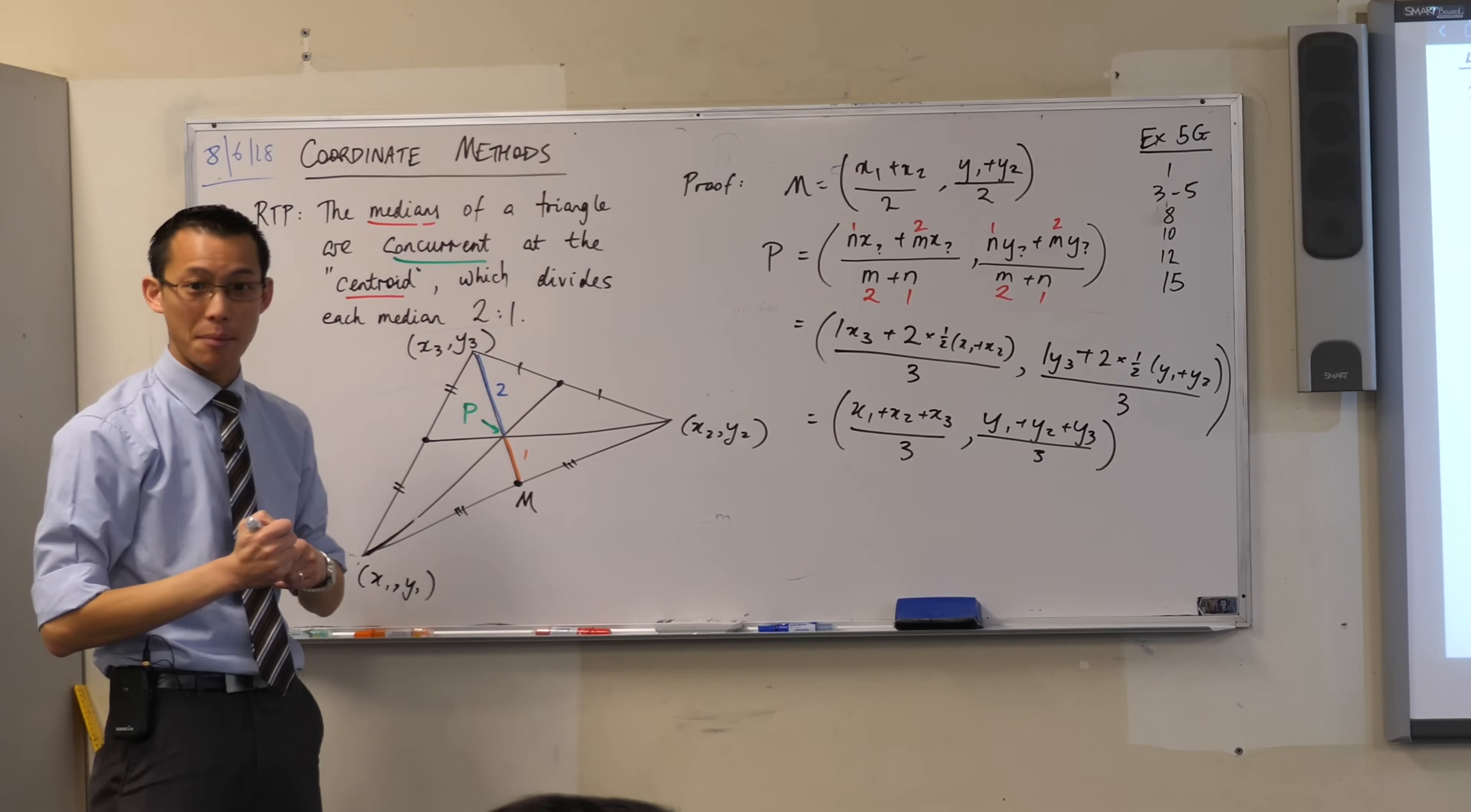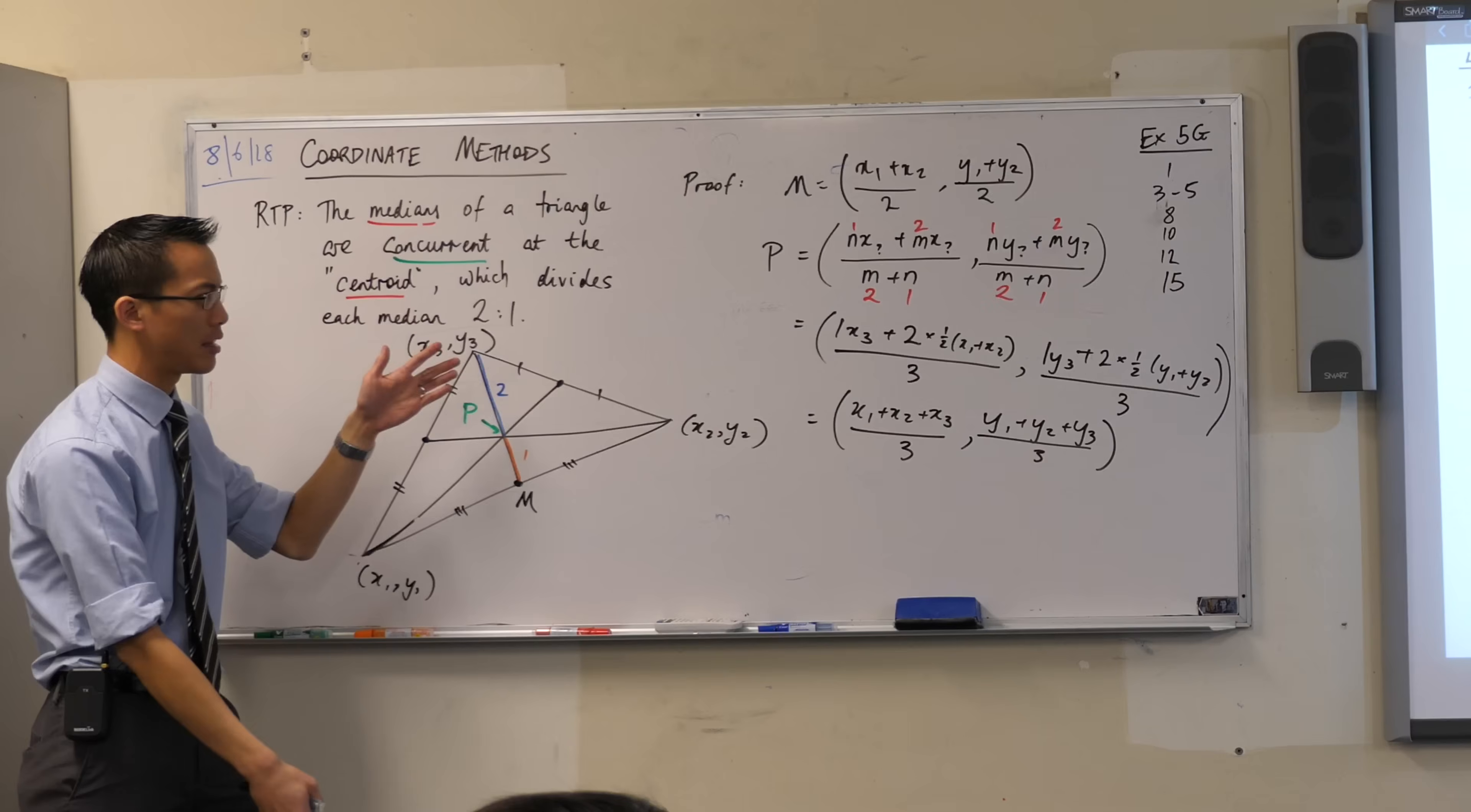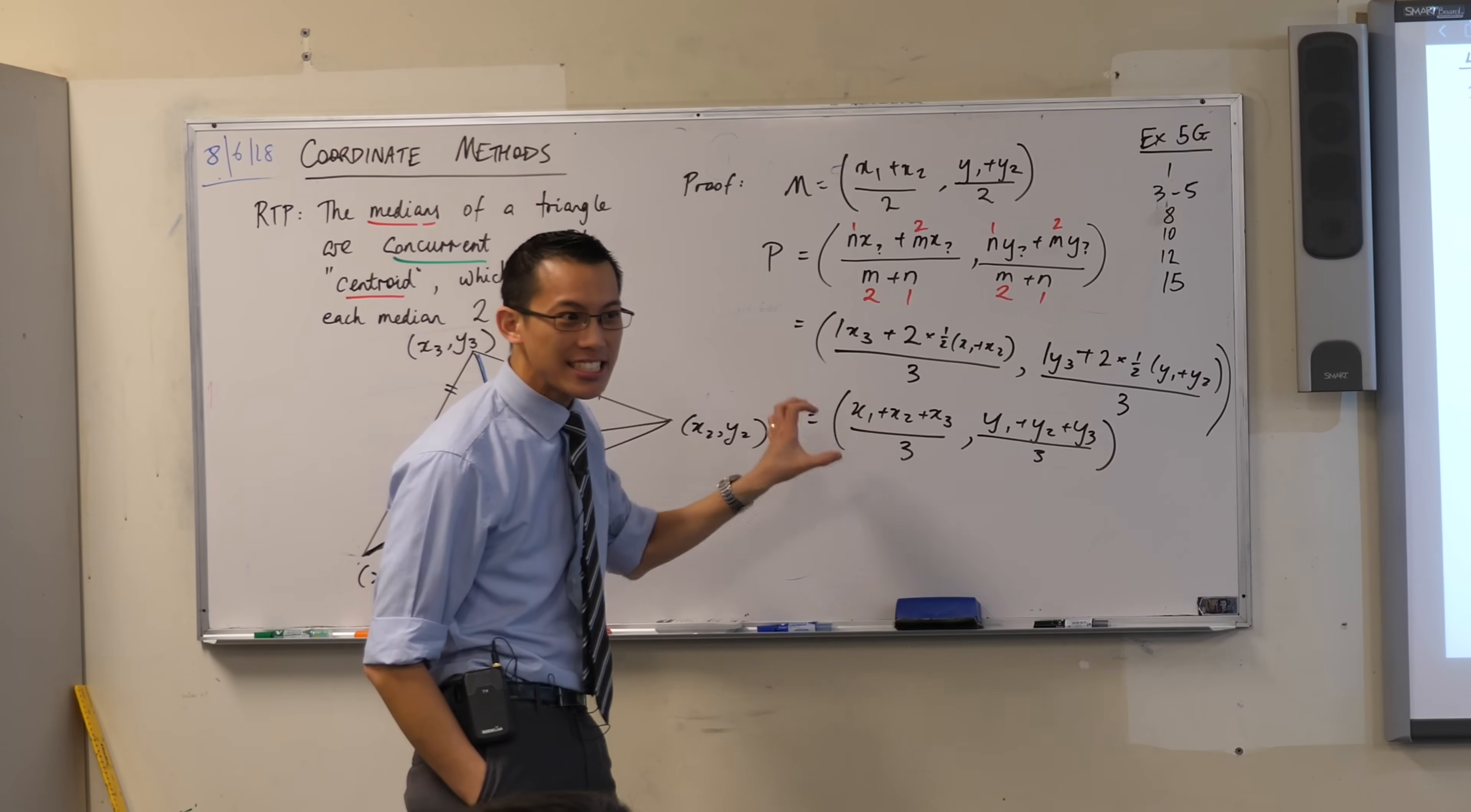Okay. Now, what have we just established? Well, we looked at one particular median. We looked at this midpoint. We went to the opposite side. And then we did the coordinate, sorry, the ratio division formula. And this is what we came up with. But I just want you to notice. Look at this result. Doesn't it look strange, right? Or maybe when I say strange, I mean like neat, really nice.